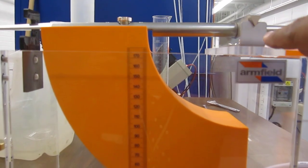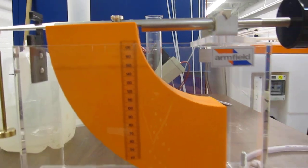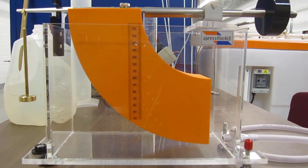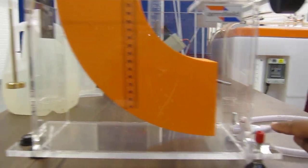The pivot also happens to be the center of the two circles that form the quadrant. And this is set on a transparent tank, which has a drain valve in here.